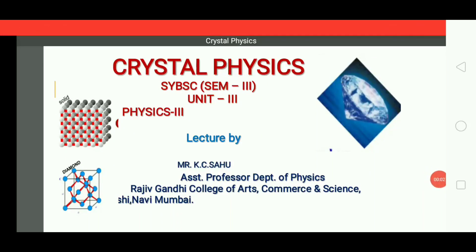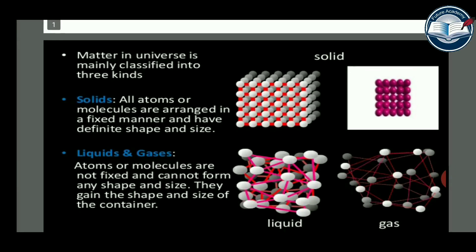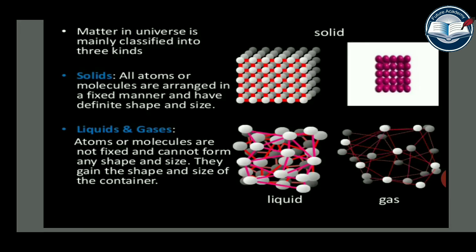Good morning students. Today I am going to discuss about the new unit crystal physics of physics 3. Matter in the universe is mainly classified into three kinds: solids, liquids, and gases. Solids are materials where all atoms or molecules are arranged in a fixed manner and have definite shape and size. Liquids and gases have atoms or molecules that are not fixed and cannot form any shape; they gain the shape and size of their container.